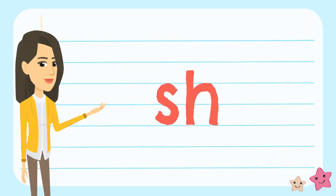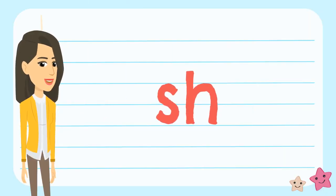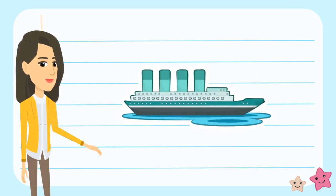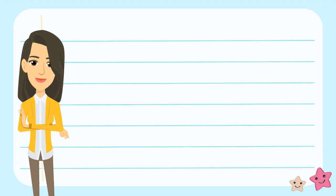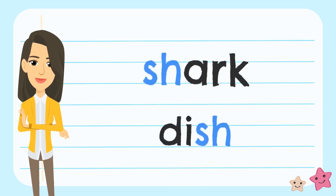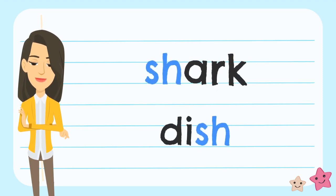When the letters S and H come together, they make a SH sound, like in ship. Examples of digraph SH words are shark and dish. The SH in both words makes the SH sound.